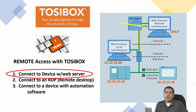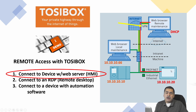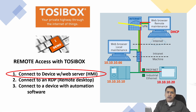For the first connection, we establish a VPN tunnel — shown here in yellow — and connect to an HMI. At my local site I'm using DHCP to establish my IP address locally. Once through the VPN tunnel, the remote subnet is 10.10.10 — the HMI is at 10.10.10.20. I'll make that connection and browse into the HMI using a browser. To establish the VPN tunnel, I need my TosiBox key.